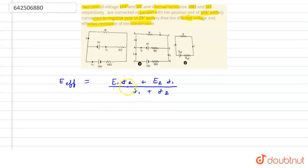Now, we can use this formula if both these cells are connected with the same terminals. But in this case, the terminals are not the same. One is positive and here it is negative. So, that's why the formula will become E effective equals E1 R2 minus E2 R1 divided by R1 plus R2.